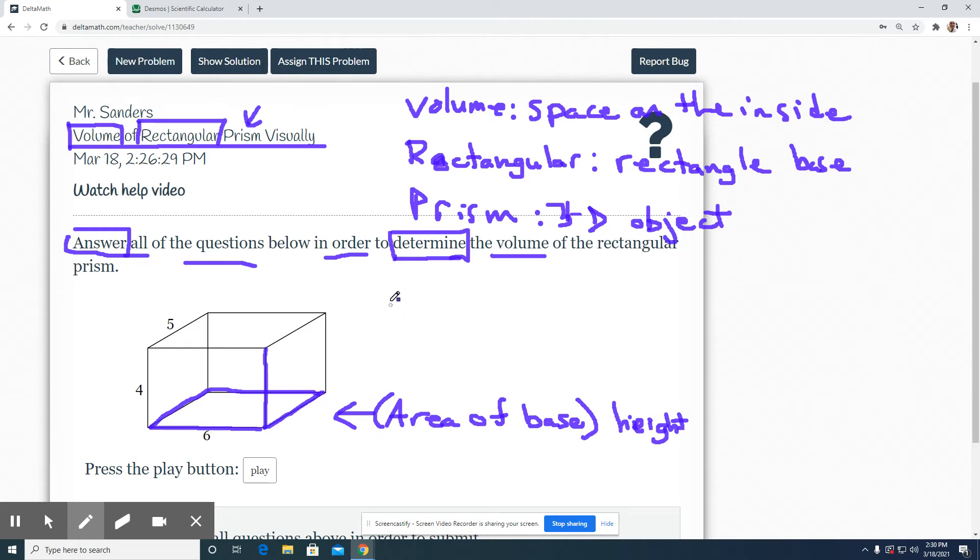So for these types of problems, it would be length times width, and that's your area of the base. These two - length times width - is the area of the base, and then you're multiplying it by the height. So there's three parts that you're multiplying here, but make sure you don't just multiply these three numbers together. Actually focus on what's going on here for this problem.